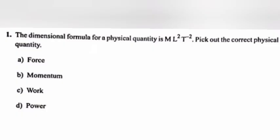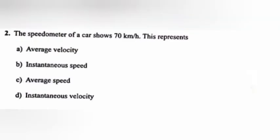Question 1: The dimensional formula for a physical quantity is M L² T⁻². Pick out the correct physical quantity. Answer: C, work. Question 2: The speedometer of a car shows 70 kilometer per hour. This represents answer B, instantaneous speed.